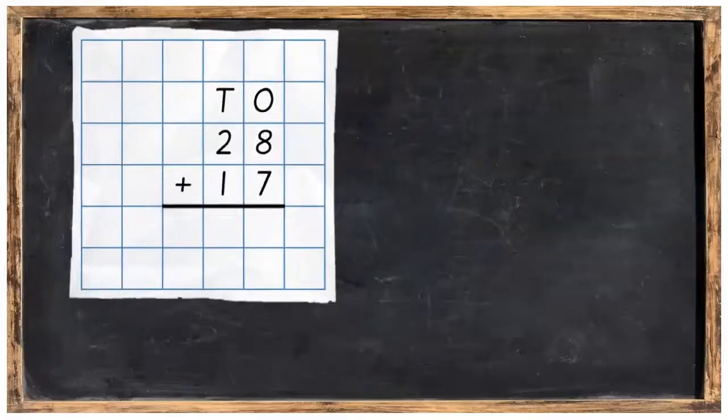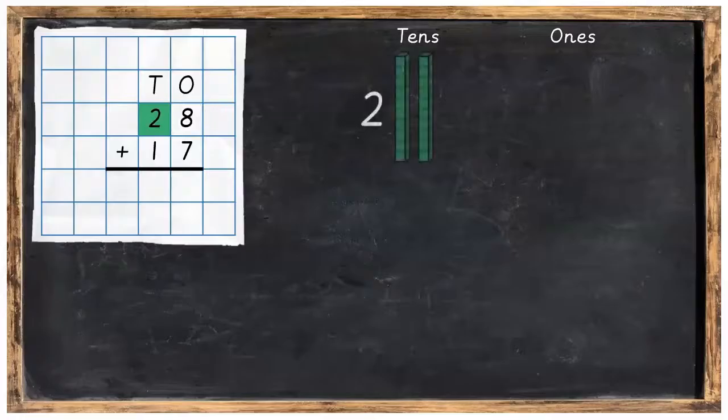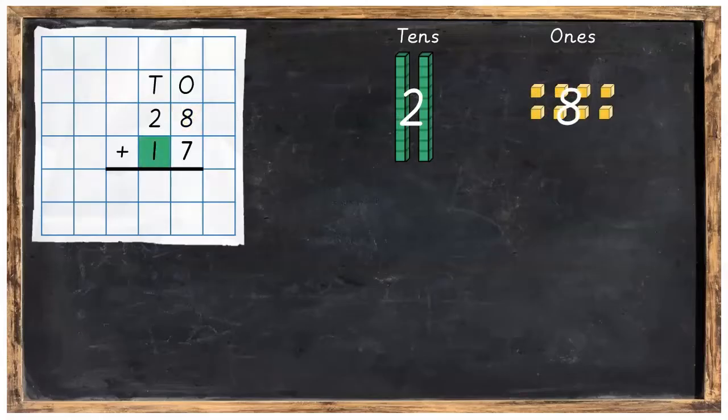Great work. What I'd like you to do now is lay out your tens and ones. On the top we're going to have 2 tens and beside that we're going to have 8 ones. Underneath that, we're going to have 1 ten and then 7 ones.